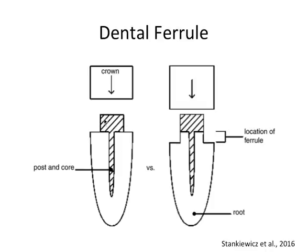They also had a post placed in the root canal system in order to retain the core — root canal treatment, post and core, a pretty classic setup for a tooth that's been through a lot. One of these is a good design and one is bad. The picture sort of gives it away because one has a ferrule setup which makes it inherently stronger, but let's explain why.